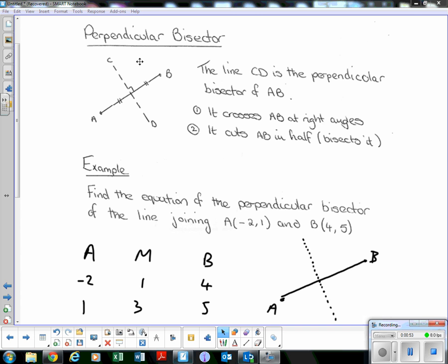So if we drew a line, say from there, or from there, and it wasn't perpendicular, it would just be a bisector. So again, it crosses AB at right angles, and it cuts AB in half for bisectors.